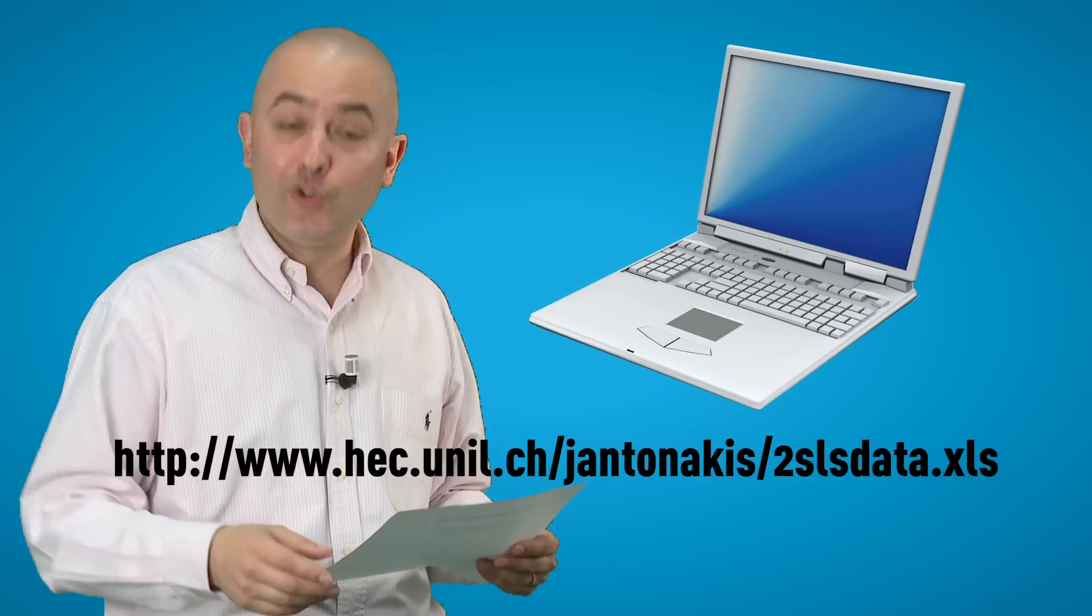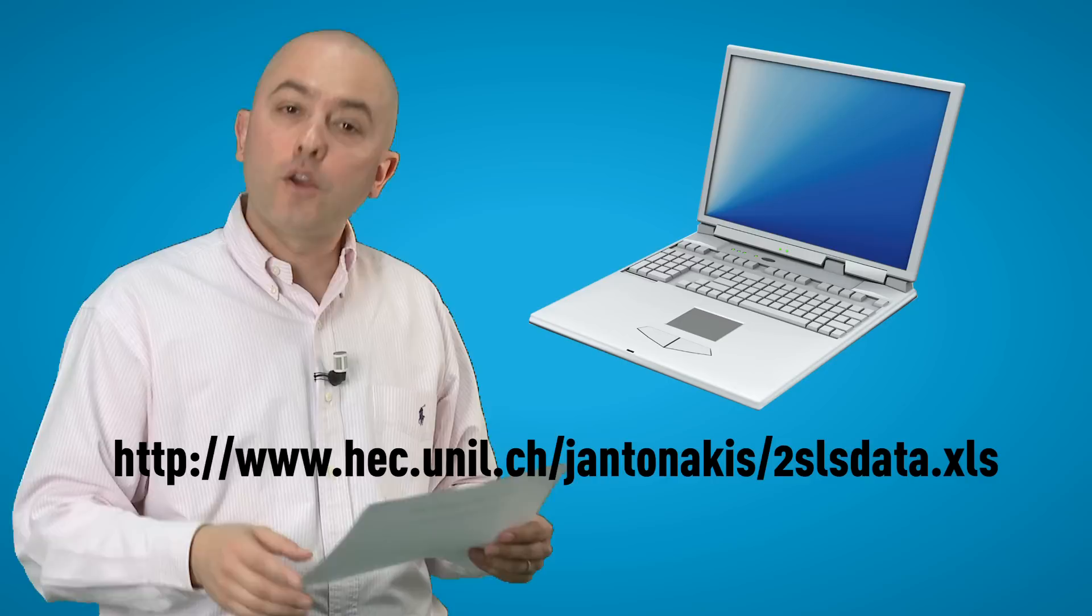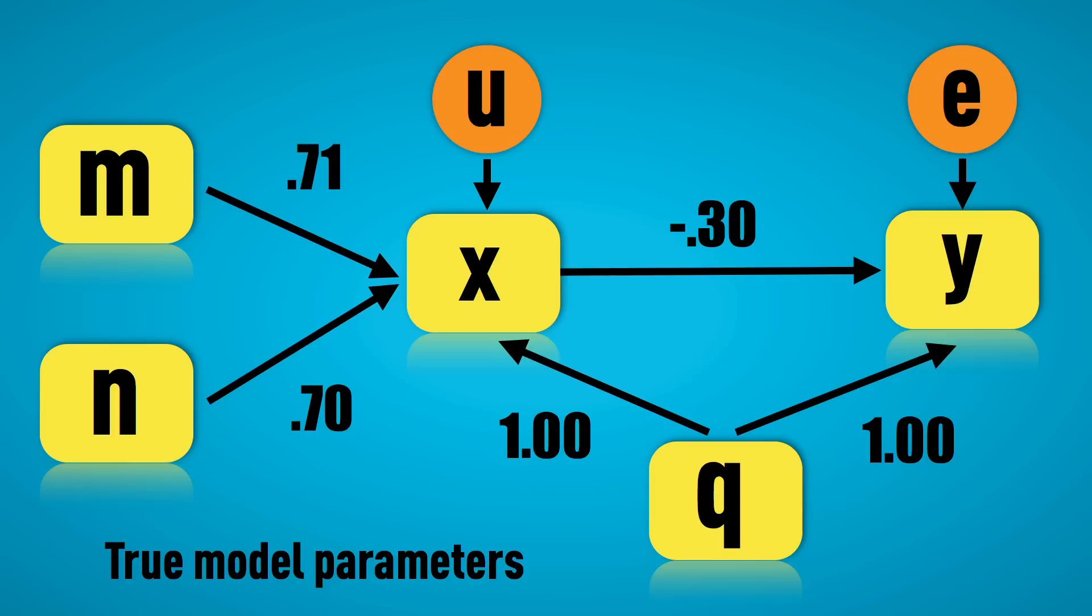Let me demonstrate to you a specific case with simulated data. This data is available on my website and I encourage you to download it and play around with it in different programs to see whether you can obtain the same estimates that I do. So, suppose the model that generated the data, in fact the true model underlying the relationships between the two variables, is depicted as such. We have X that causes Y, but we have Q that causes both X and Y. We also have two instruments, M and N, that are exogenous. They don't correlate with U, with E and indeed with Q. So, what we are trying to estimate is the causal effect of X on Y. And this causal effect is supposed to be minus point 30.